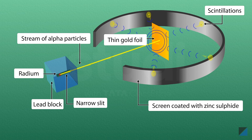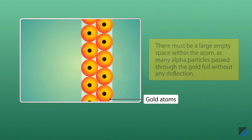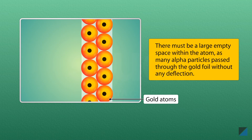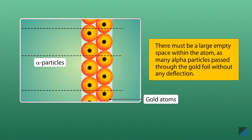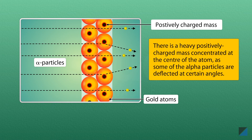Based on the observations, Rutherford concluded that there must be a large empty space within the atom, since most of the alpha particles passed through the gold foil without any deflection. Some alpha particles are deflected to certain angles, which means there is a heavy positively charged mass present in the atom.